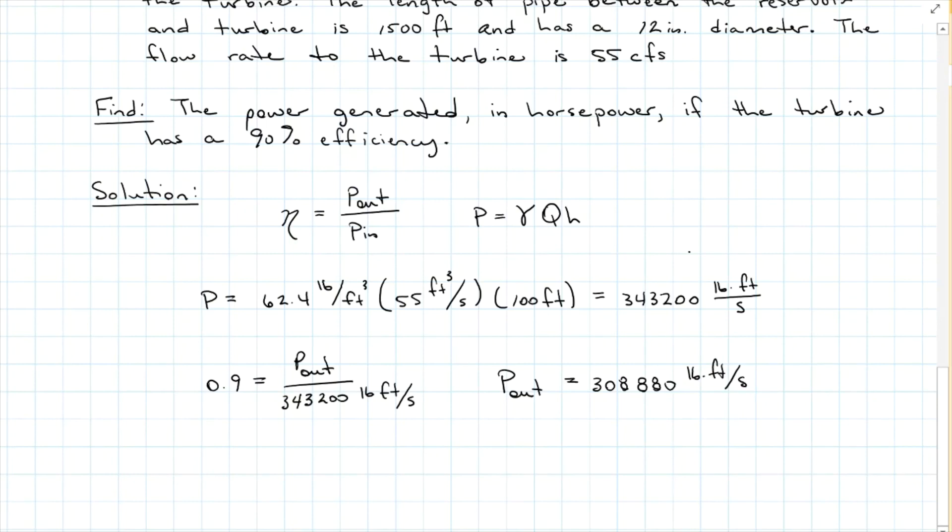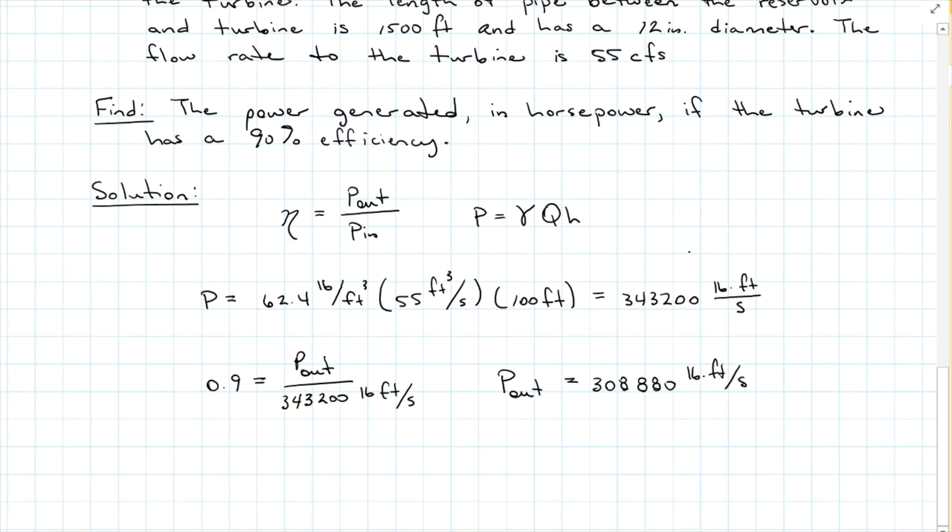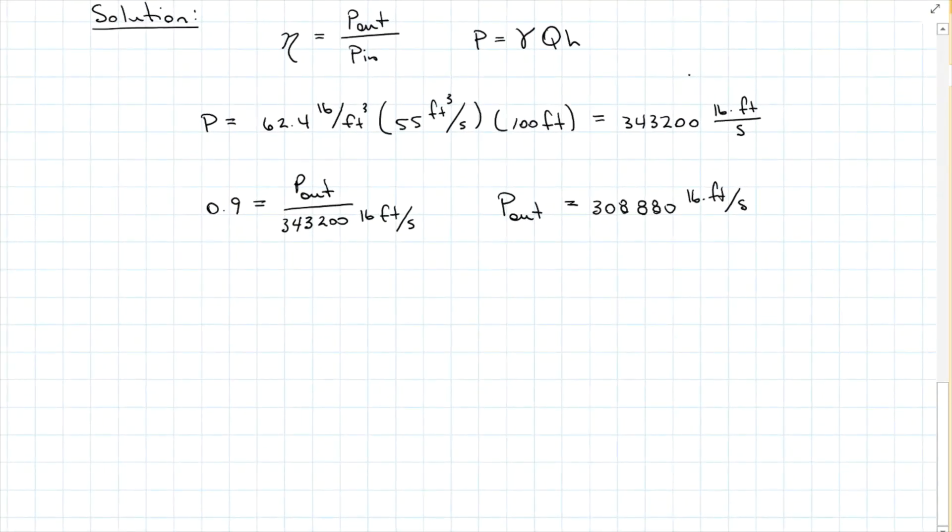No, I don't want this in pound feet per second. I want it in horsepower. So that means I need to divide by 550. So our output power is 562 ponies.